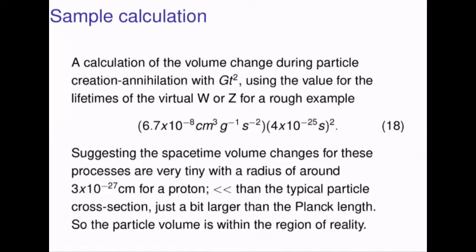This suggests the spacetime volume changes for processes during matter creation and annihilation are very tiny — a radius of around three times ten to the negative twenty-seven centimeters for a proton. That's much, much less than the typical particle cross-section, and just a bit larger than the Planck length. So the particle volume we propose here is within the region of reality.